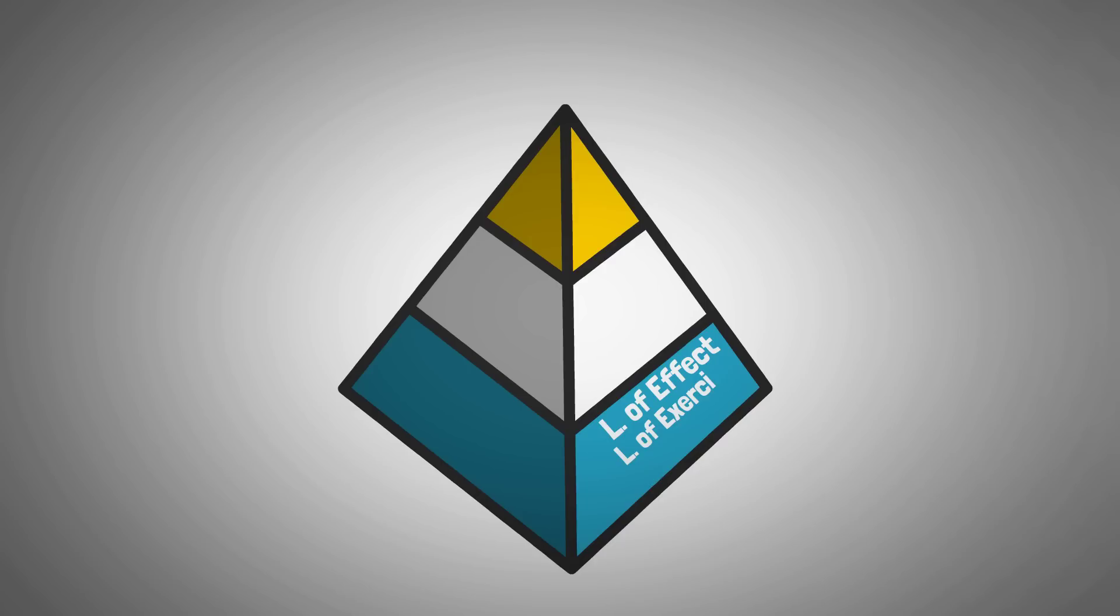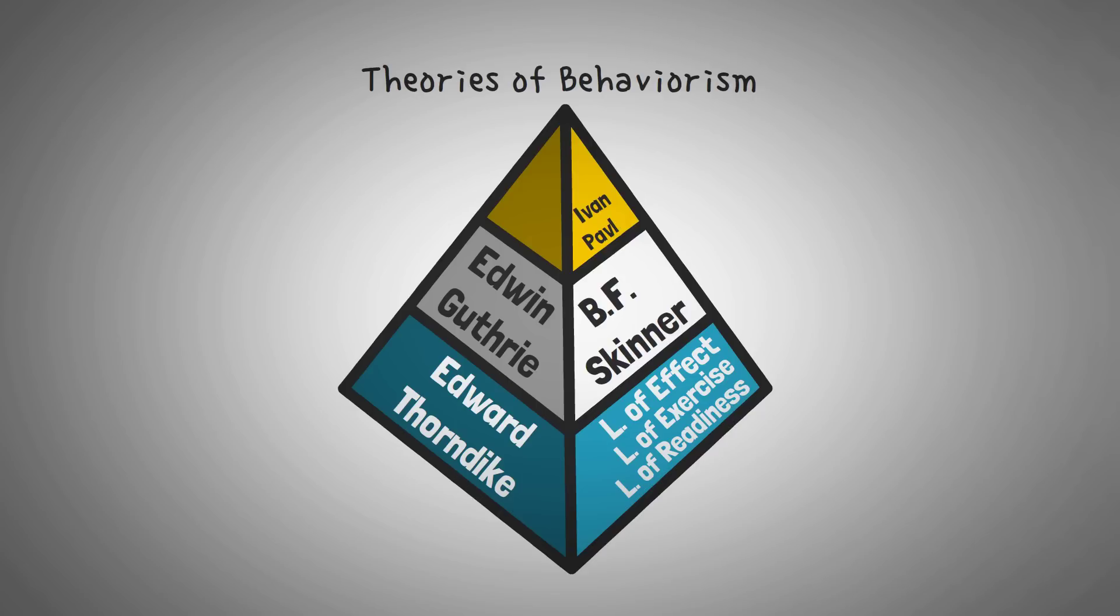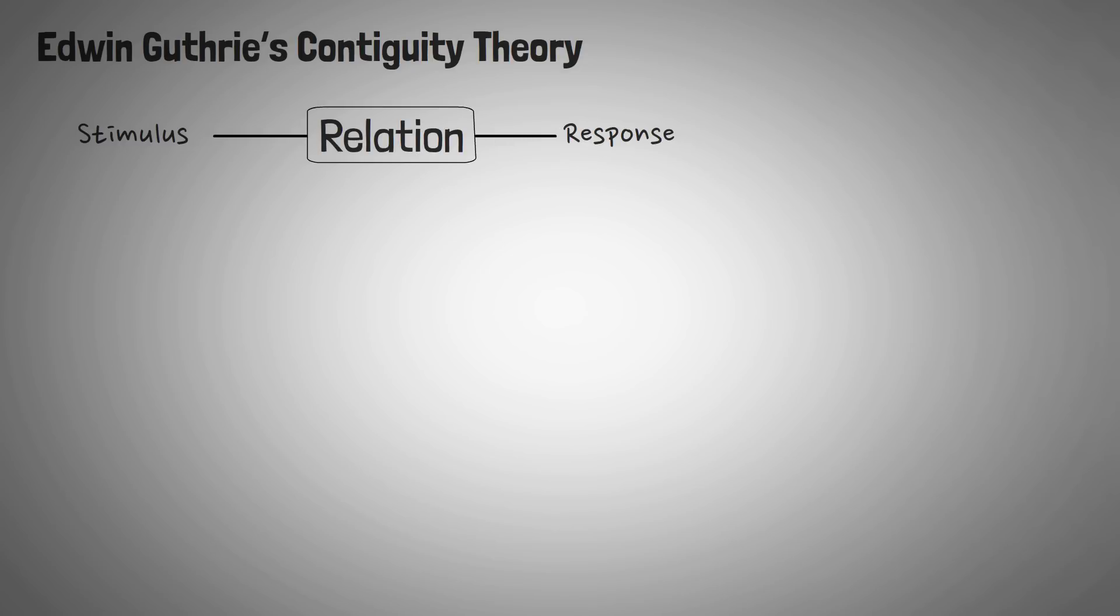These three laws set the foundation for many other theories within behaviorism. Later behaviorists, including B.F. Skinner, Edwin Guthrie, and Ivan Pavlov have proposed theories that relate to or are inspired by the work of Edward Thorndike. One such theory includes Edwin Guthrie's contiguity theory. Like other behaviorists, Guthrie believed that learning occurred when connections were made between a stimulus and a response, but his ideas went beyond exercise and readiness.